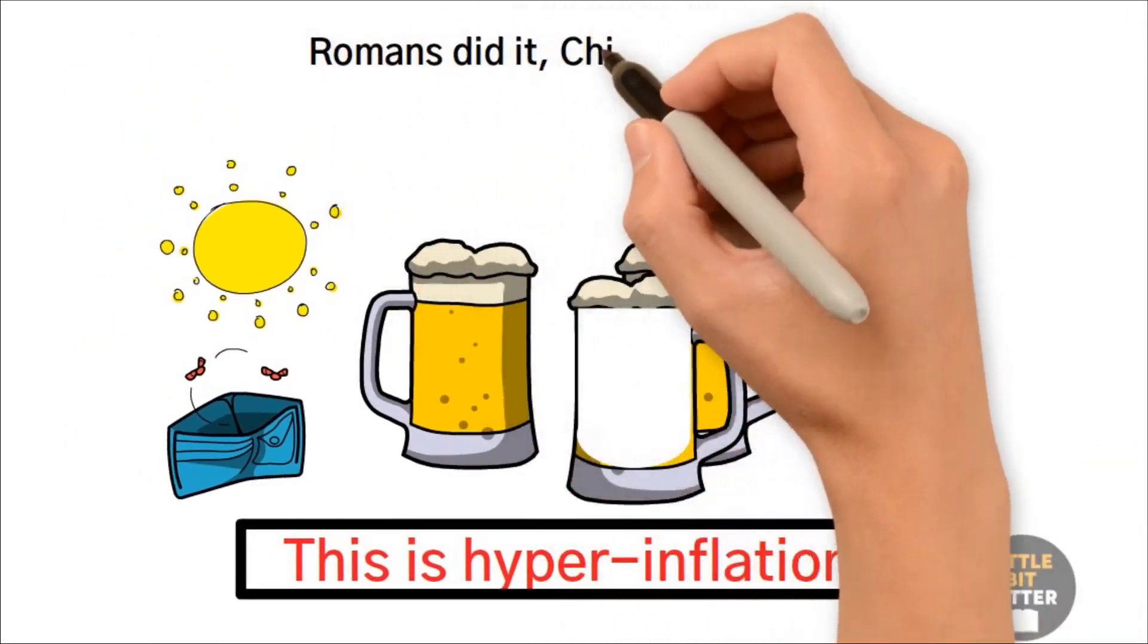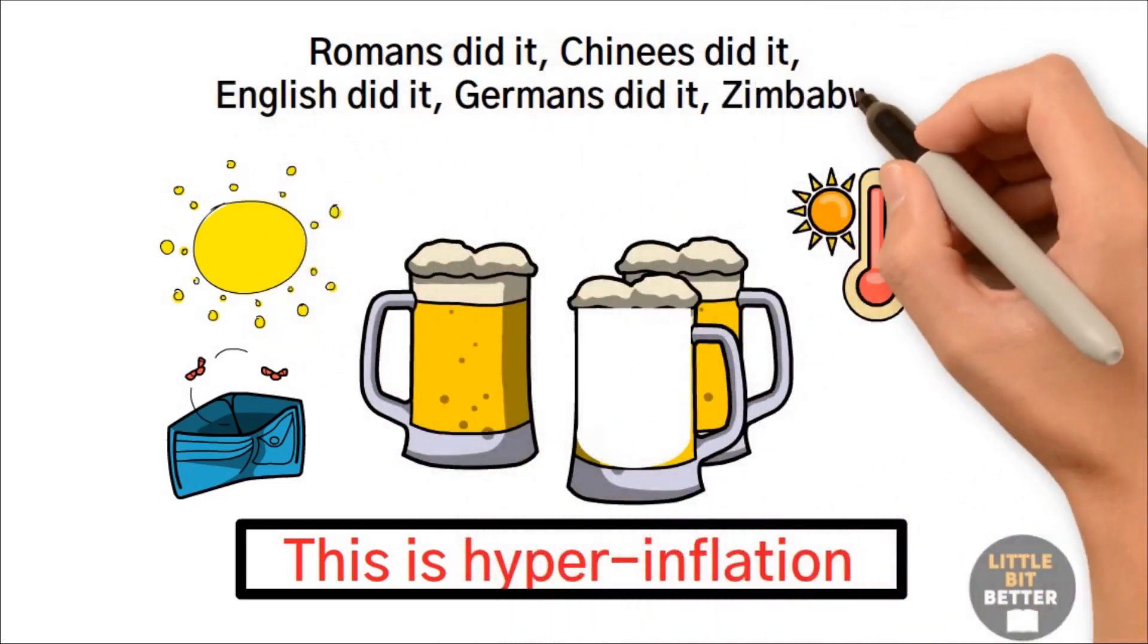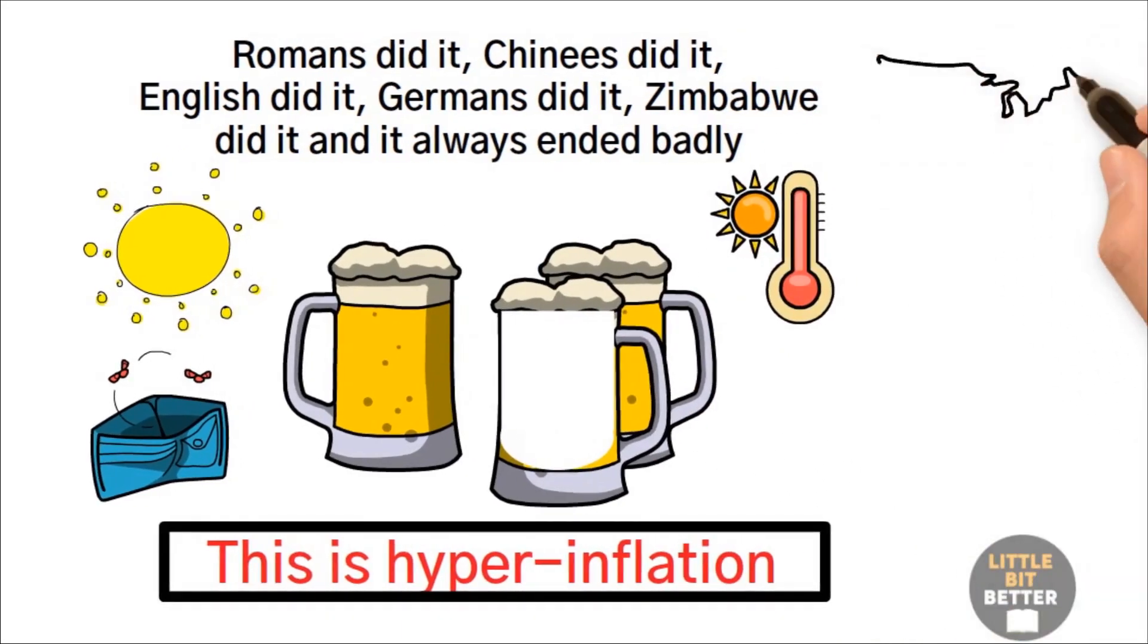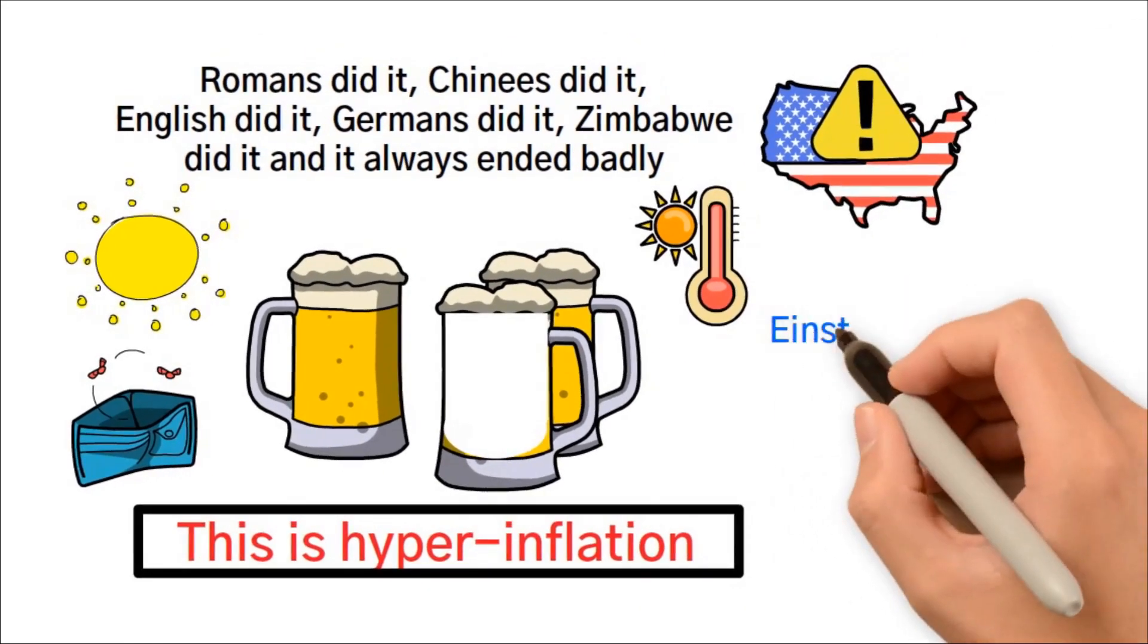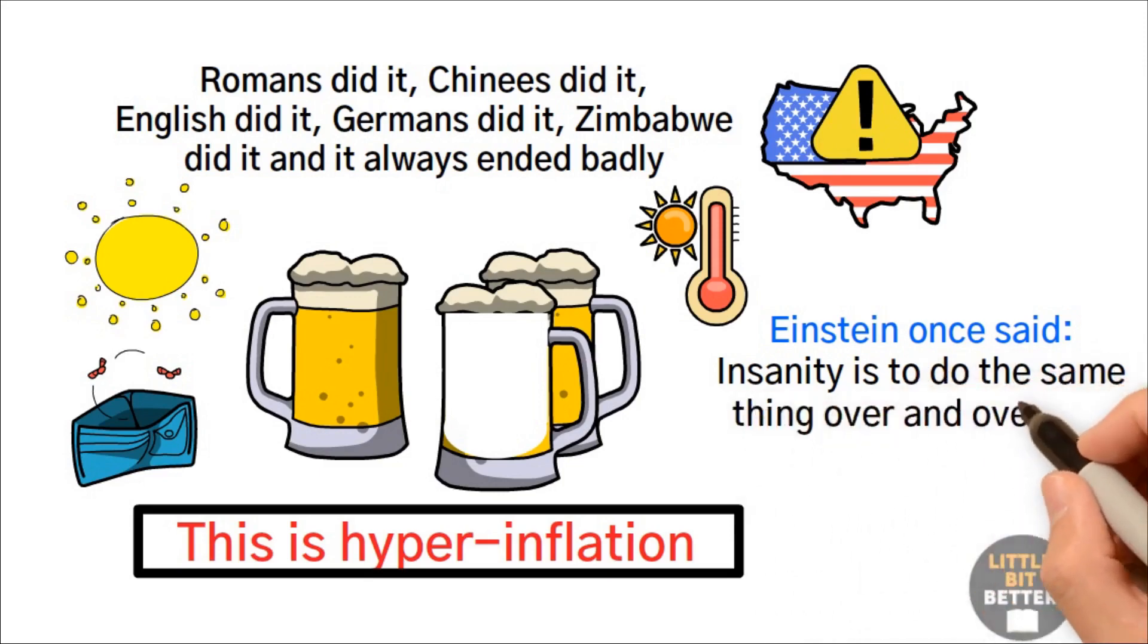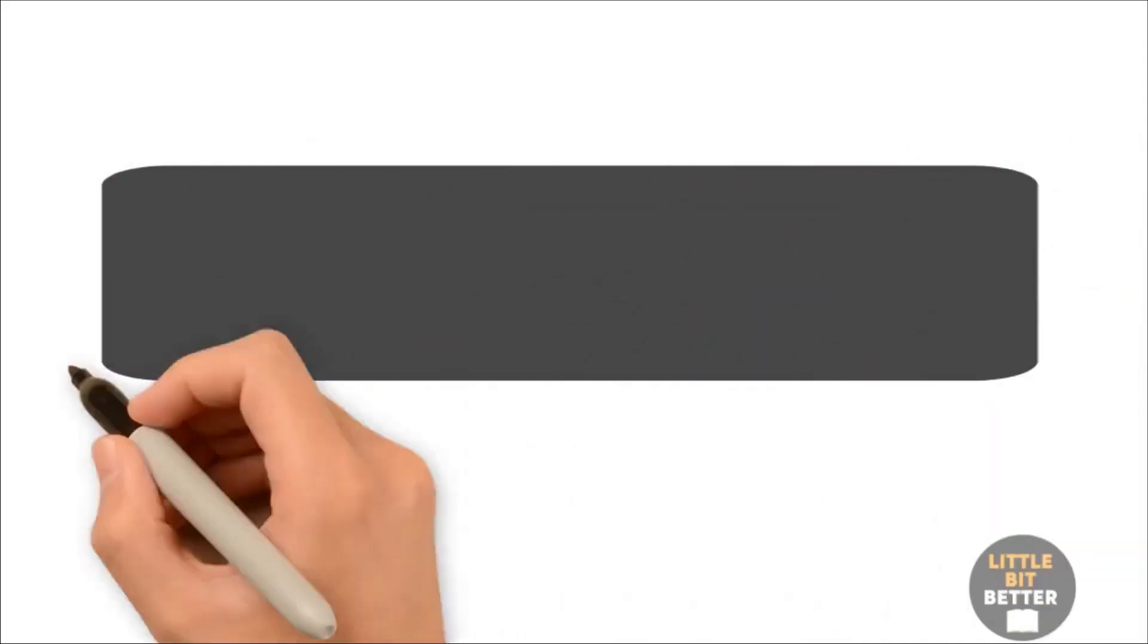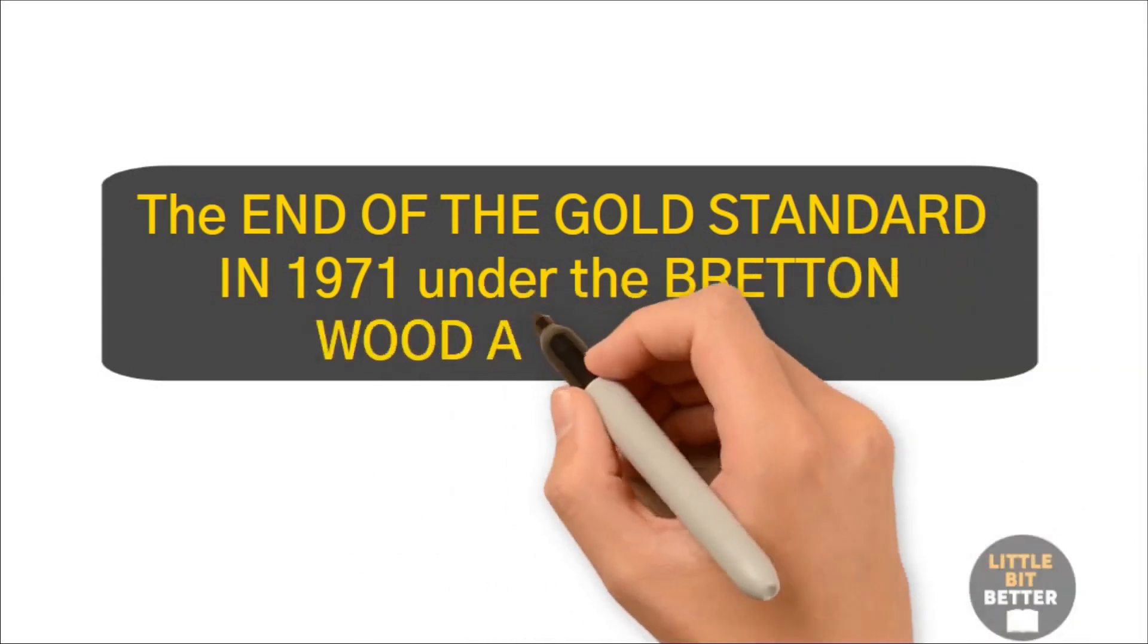Romans did it. Chinese did it. English did it. Germans did it. Zimbabwe did it. And it always ended badly. Now, America is doing it. Governments never learn from the monetary history. Einstein once said, insanity is to do the same thing over and over and expect different results. Now that we understand what printing money means, let us talk about the end of the gold standard in 1971 under the Bretton Woods Agreement.